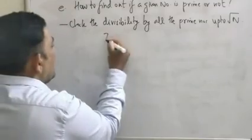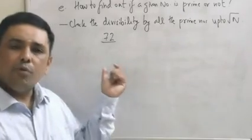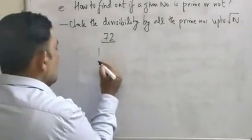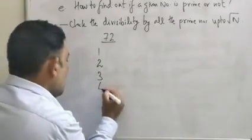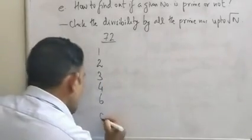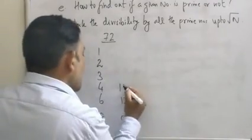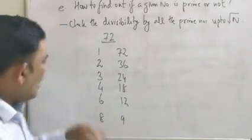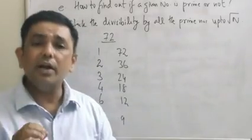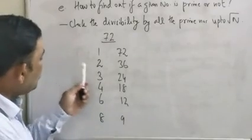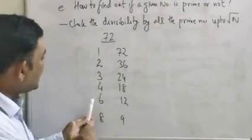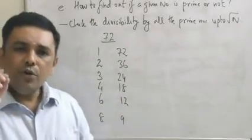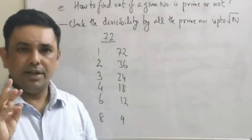Now why is this so? We need to understand with an example. Let me take the example of 72. I am going to write all the factors of 72 on the board — please pay attention: 1, 2, 3, 4, 6, 8, 9, 12, 18, 24, 36, and 72. Okay, these are the 12 factors. Are we sure? Yes. Let's quickly check again: 1, 2, 3, 4, 6, 8, 9, 12, 18, 24, 36, 72.